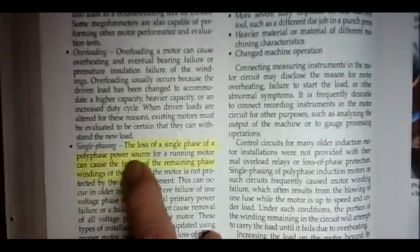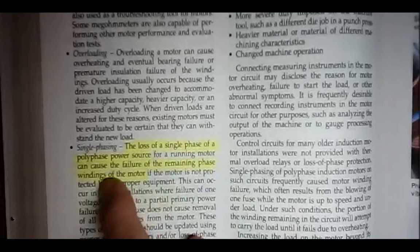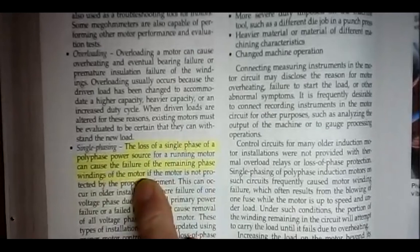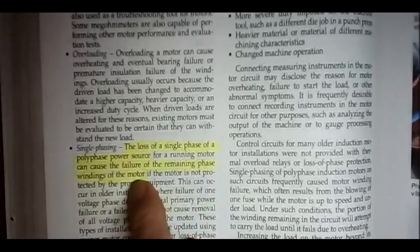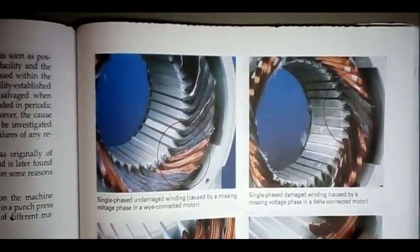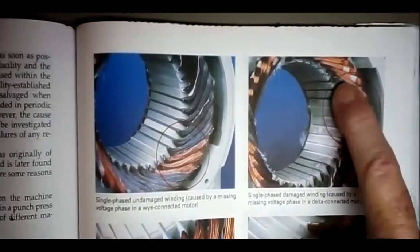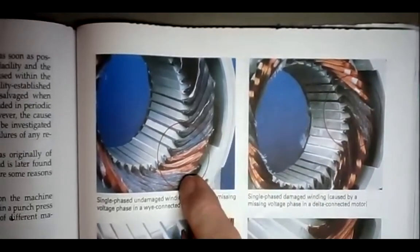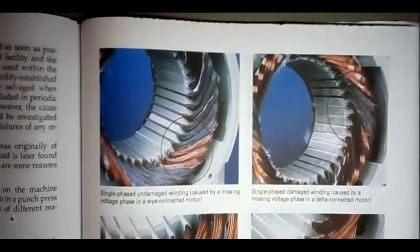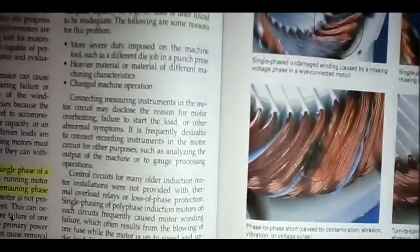The loss of a single phase of a polyphase power source can cause the failure of the remaining phase windings of the motor because they're going to have a higher current on those two windings, and the overloads won't detect it. And over on page three, they're giving us some photos of actual damage of a motor that was running in single-phase condition, a three-phase motor that was running with just two of the three phases. It was single-phase motor, so those windings have gotten burned up.